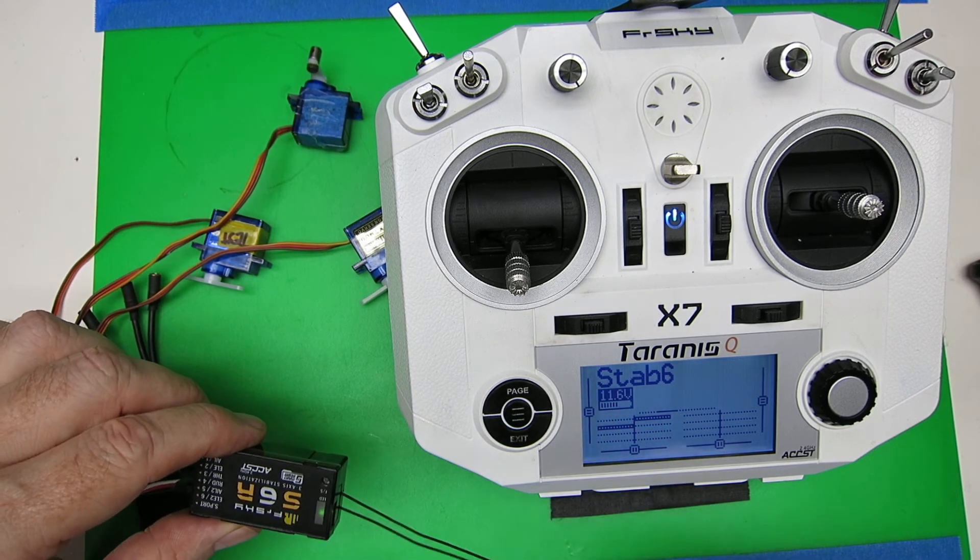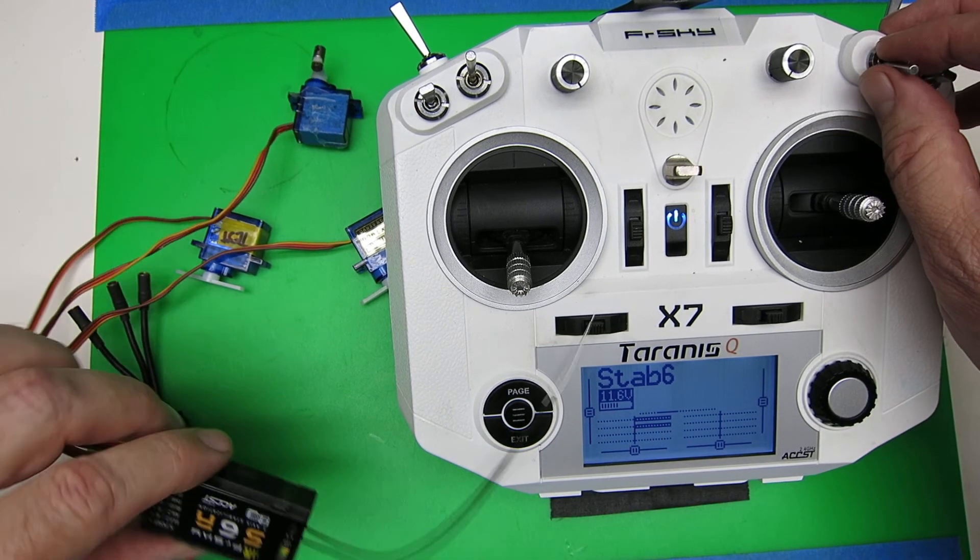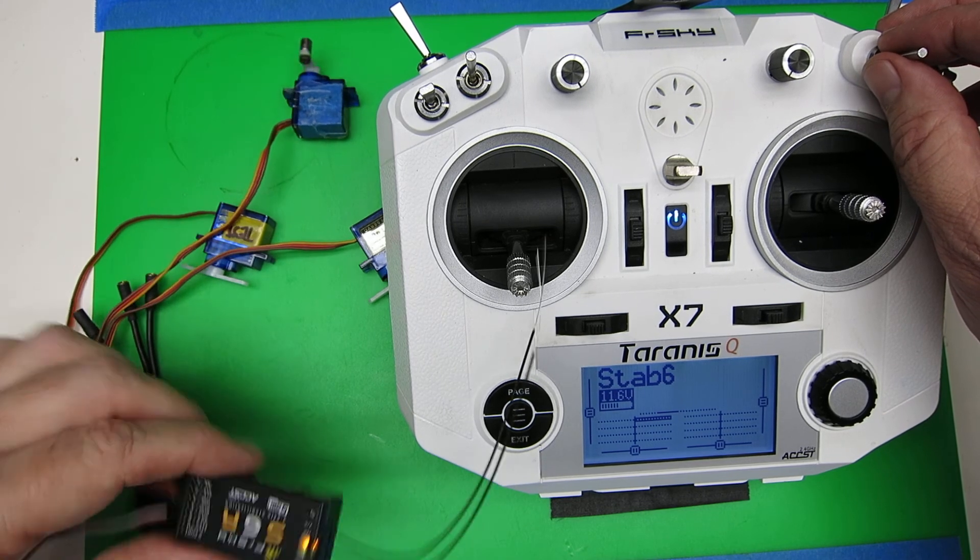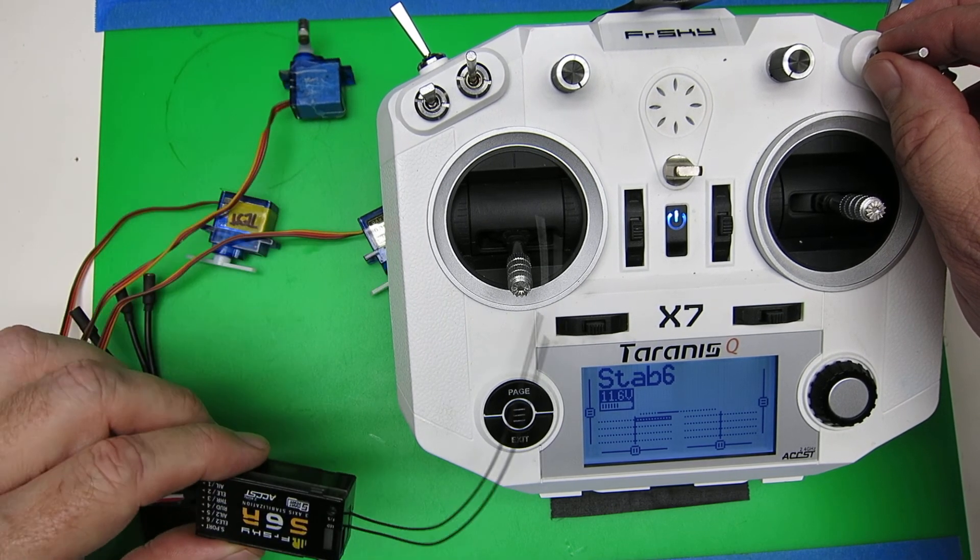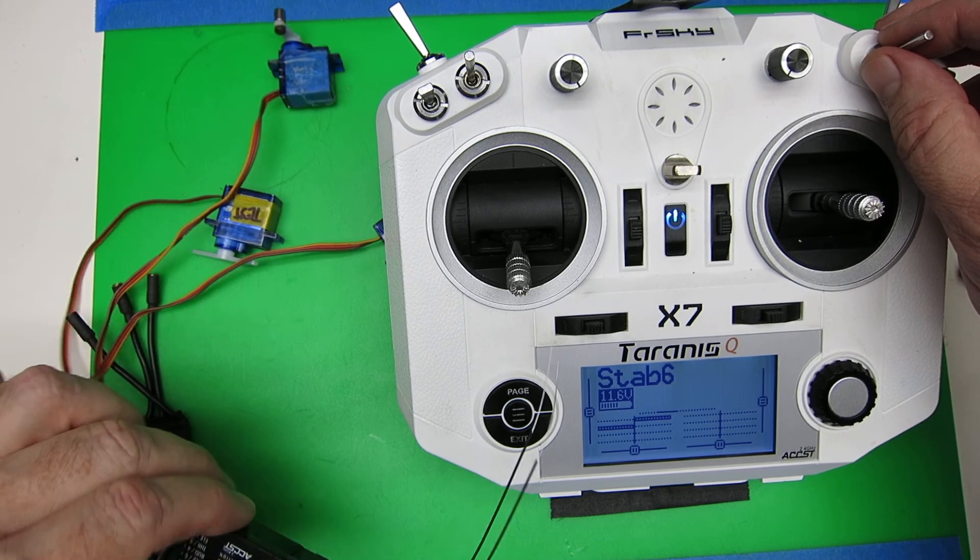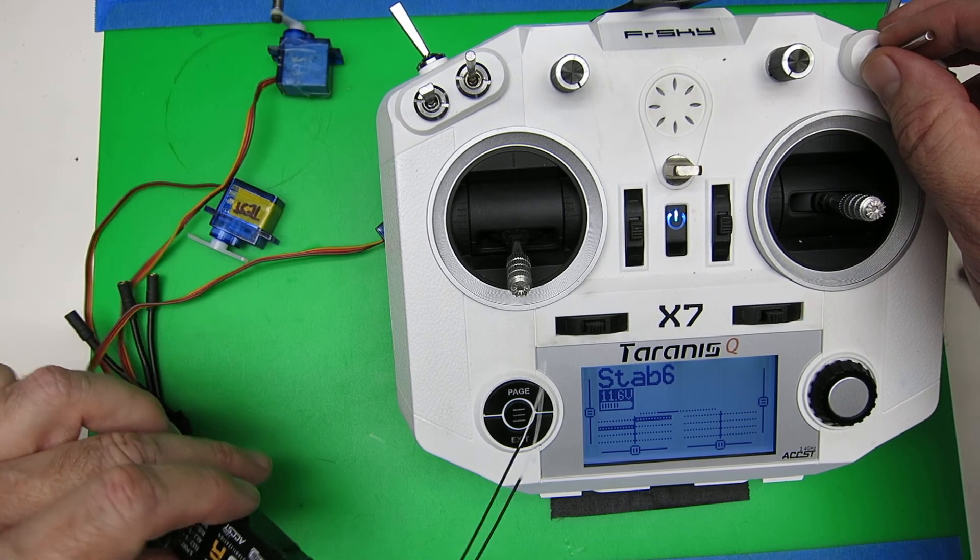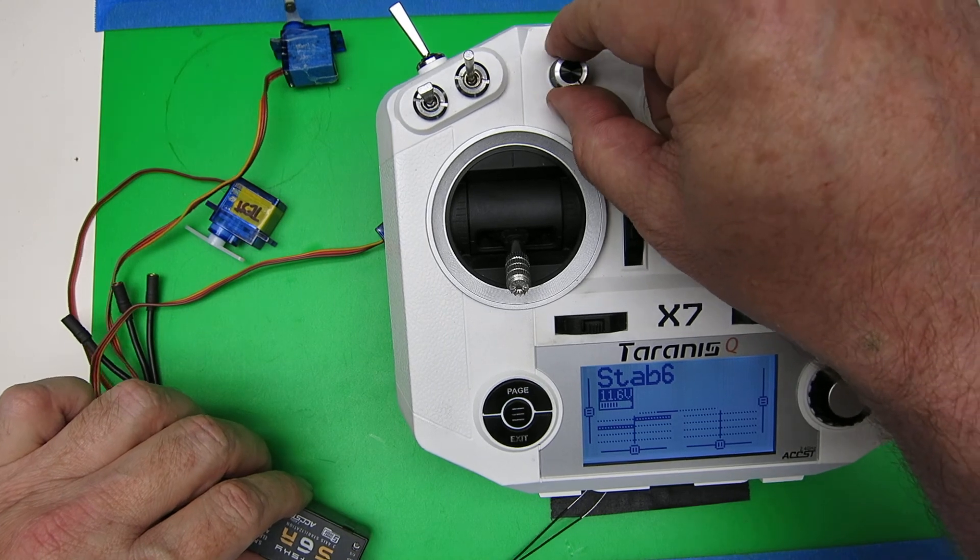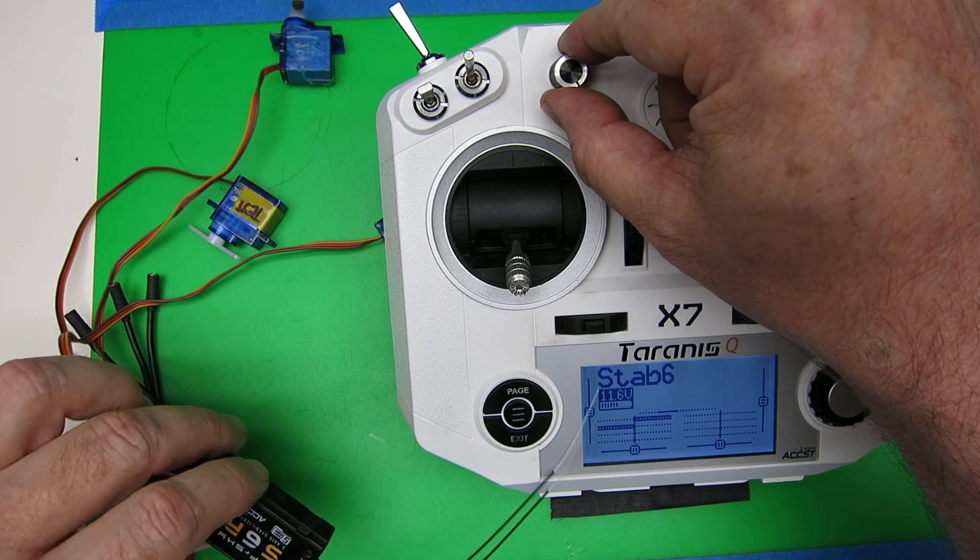You should test this out in all three modes: manual, stabilize where you just get the jerk and the return to center, and level mode where it holds the position. Be sure that you've got the gain all the way up.